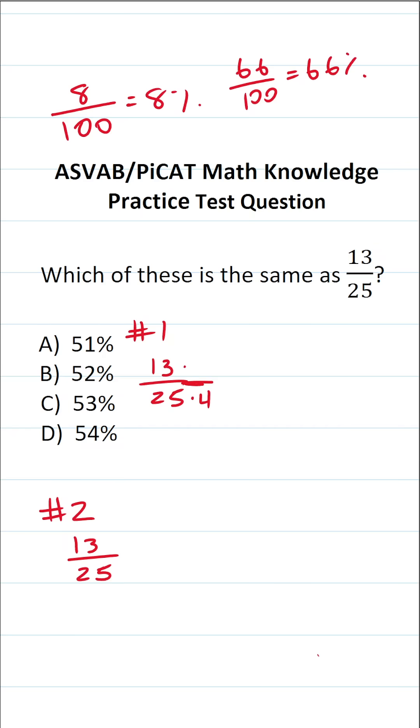we can simply multiply our numerator and denominator by 4. 25 times 4 is 100. What is 13 times 4? Well, so as not to make a mistake, I'm going to do that off to the side.